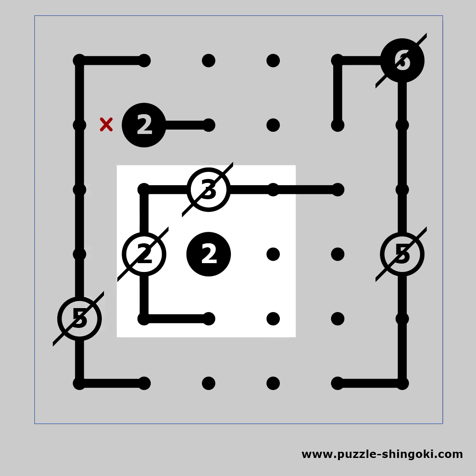This black 2 can now be easily solved. It cannot connect up, nor to the left. It must connect down and to the right. Now the 2 is completed so the line to the right should make a turn.